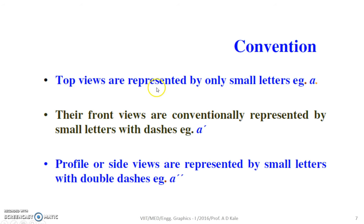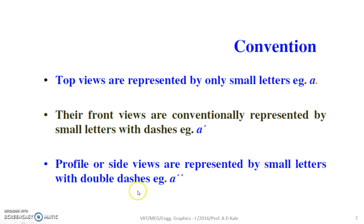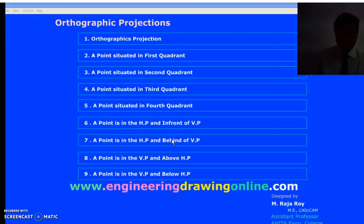Top views are represented by the small letter A, and the front view or elevation is conventionally represented by a small letter with a dash, that is A-dash. If it is a profile or side view, it is represented by small letters with double dash. This is the convention we are going to follow throughout the course.